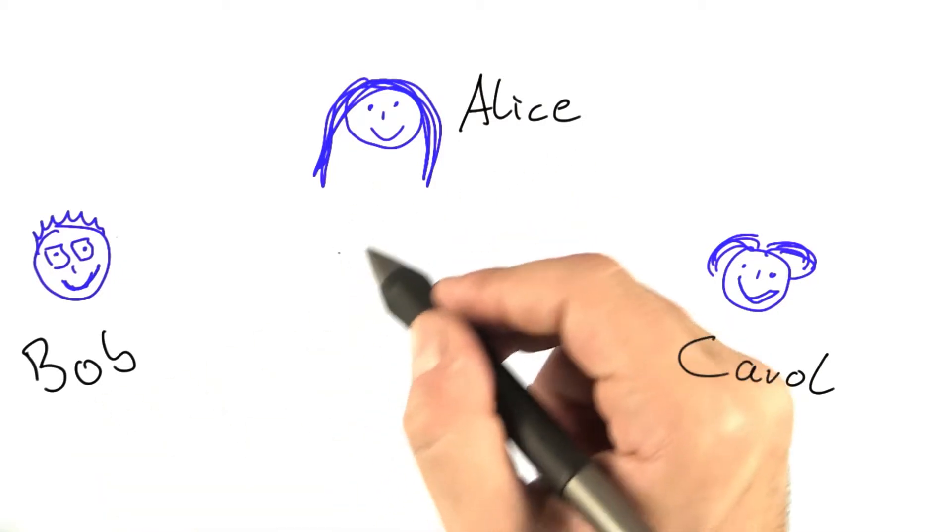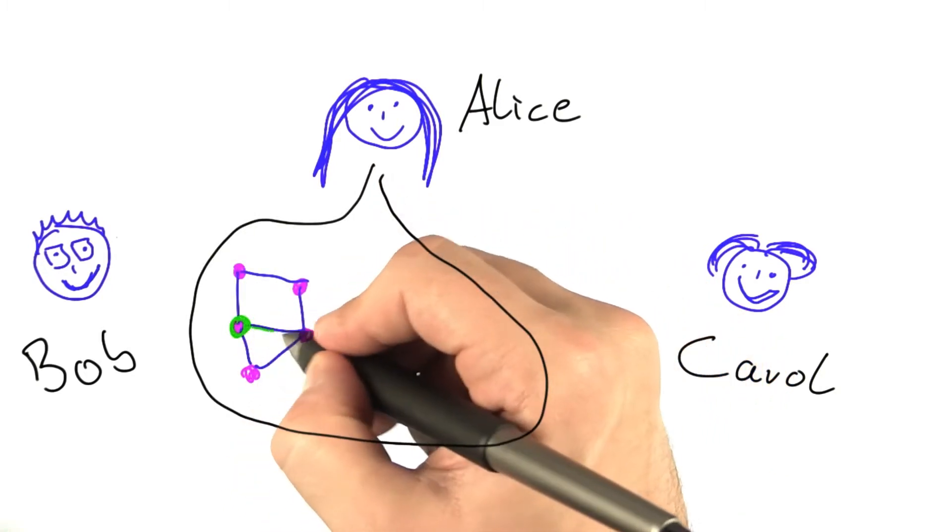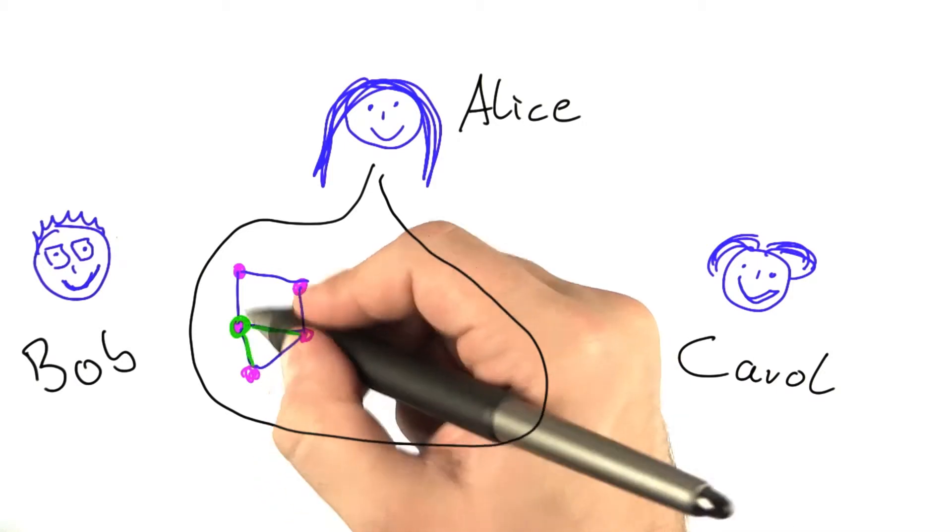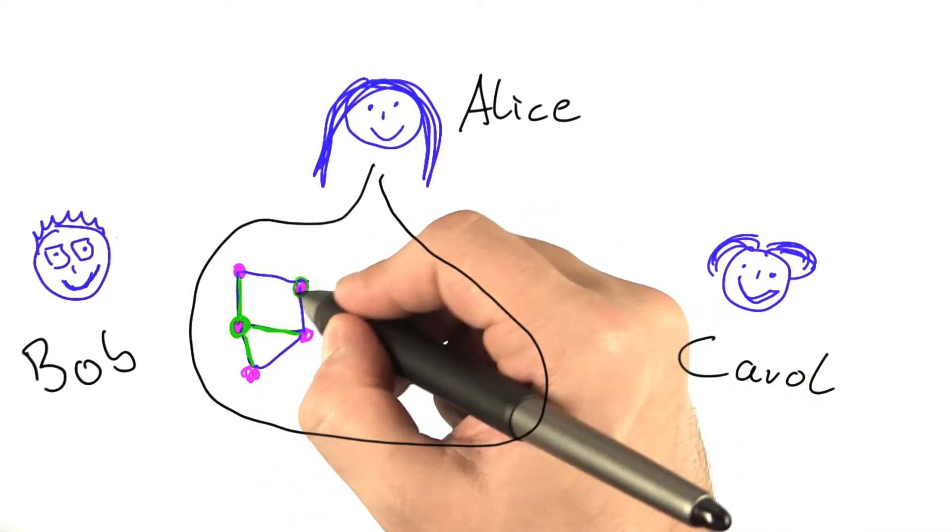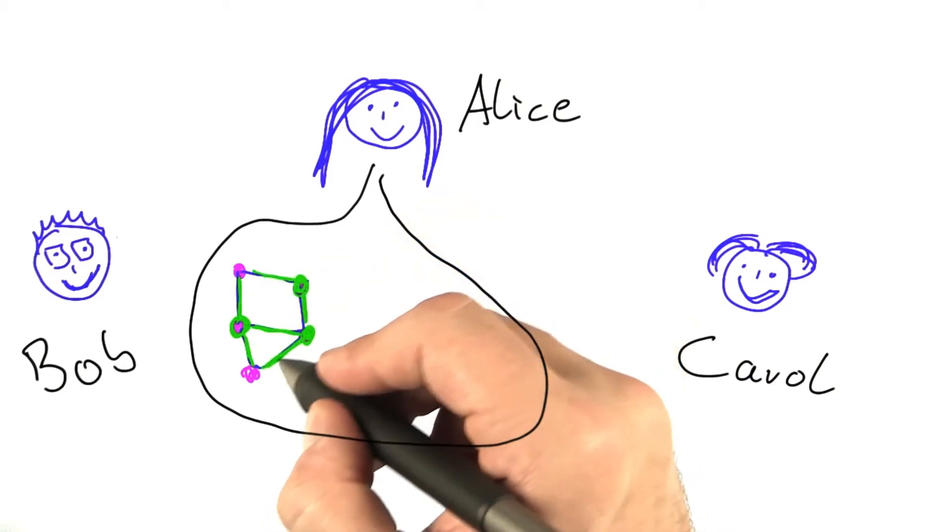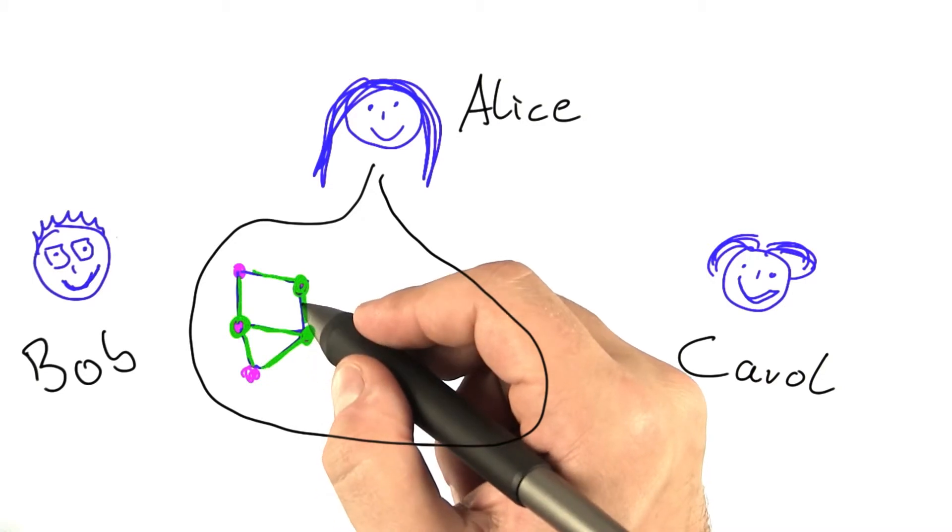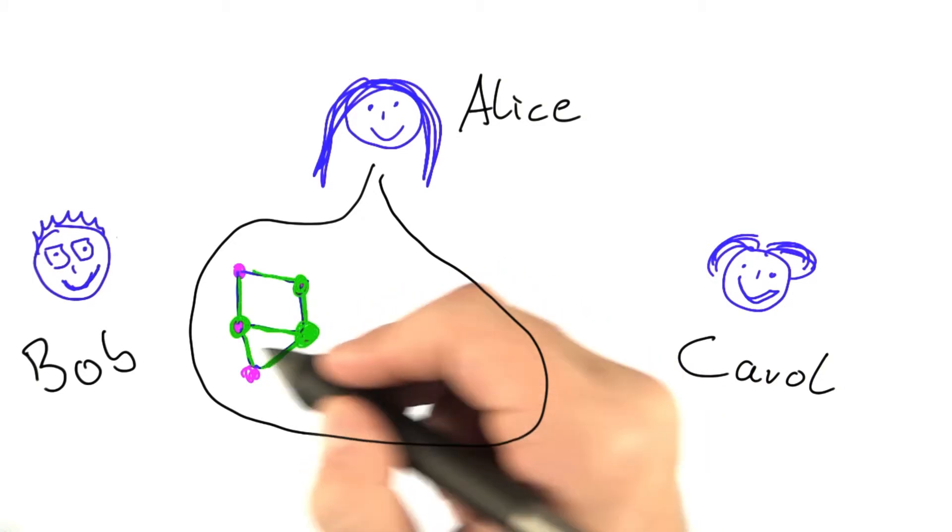Alice explains her problem using the graph terminology as well. Alice's problem, as you will remember, is to find a set of vertices so that all of the edges are covered in a network. Here, for example, if you take these three vertices, then each edge has at least one endpoint in that set of green vertices.